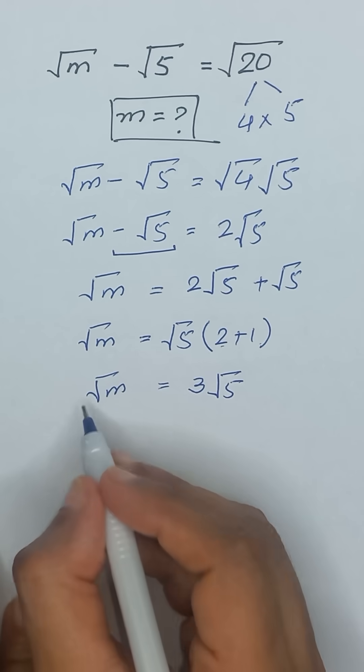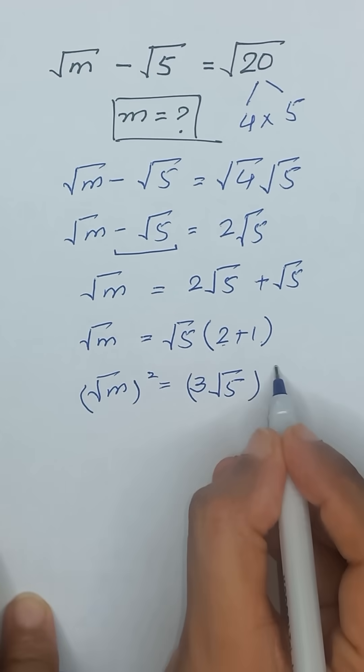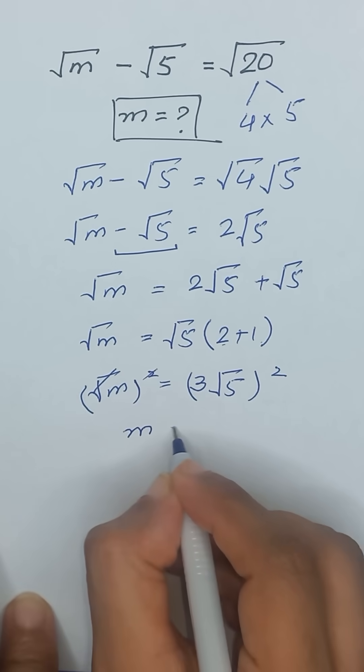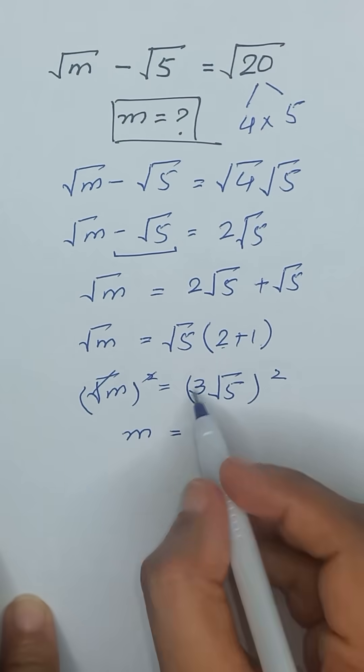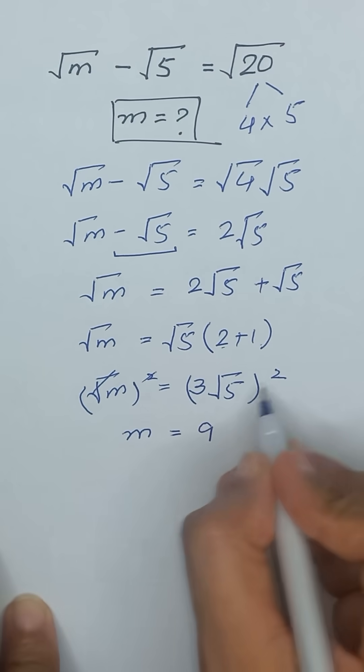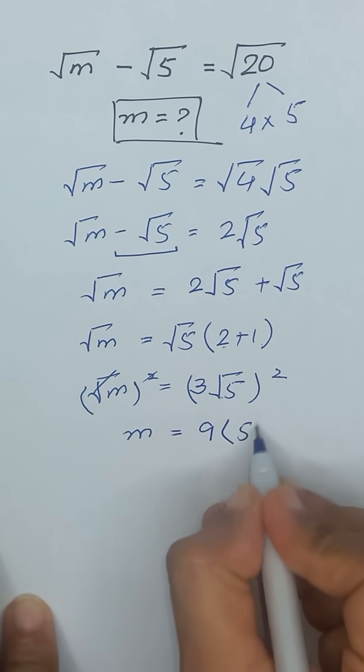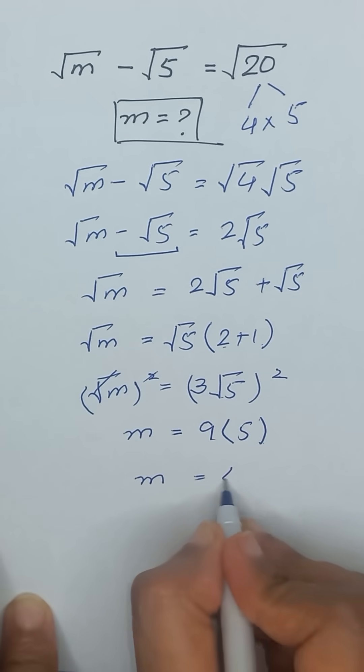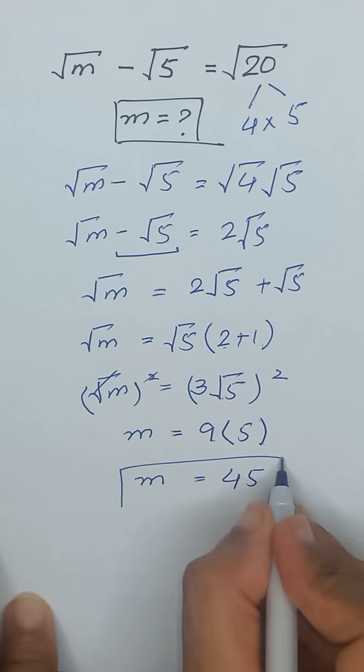To remove this square root, we will apply square on both sides. So this square root and square will be cancelled out, and m will be equal to 3 square which is 9, and this square root will be cancelled out giving us 5. So m will be equal to 9 times 5, which is 45. Thanks for watching.